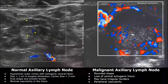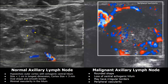On color Doppler, we will find peripheral vascularity in a malignant lymph node — we can see Doppler signals at the borders of the lymph node. The lymph node has a heterogeneous appearance, there is absence of a central echogenic hilum, and it also has a more rounded shape.